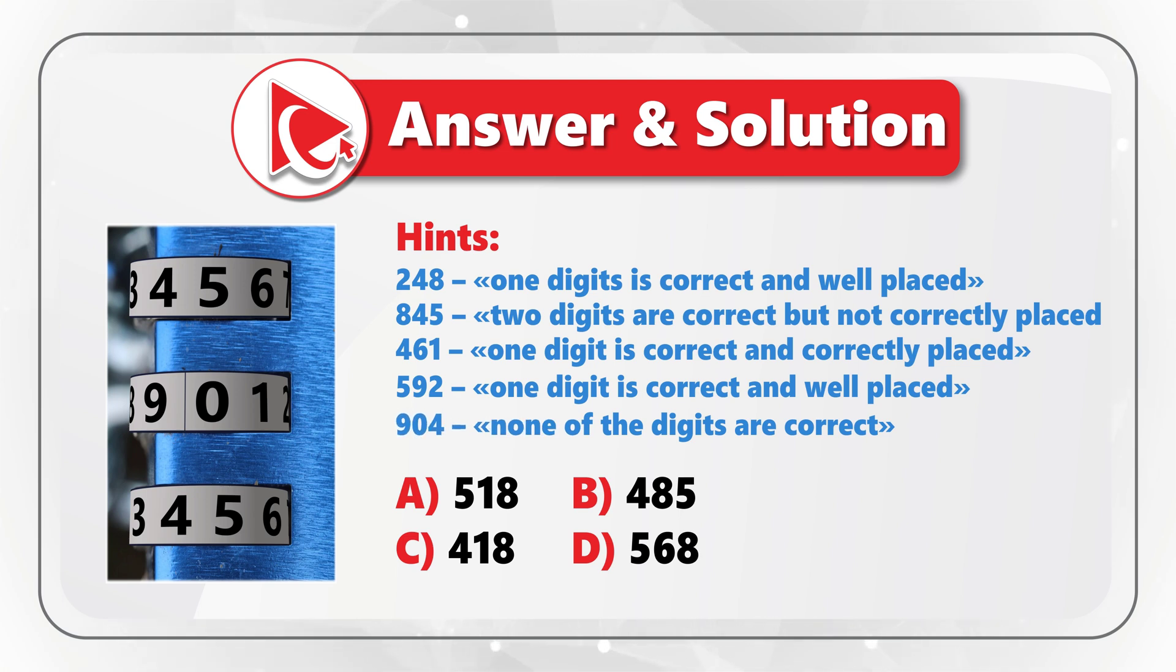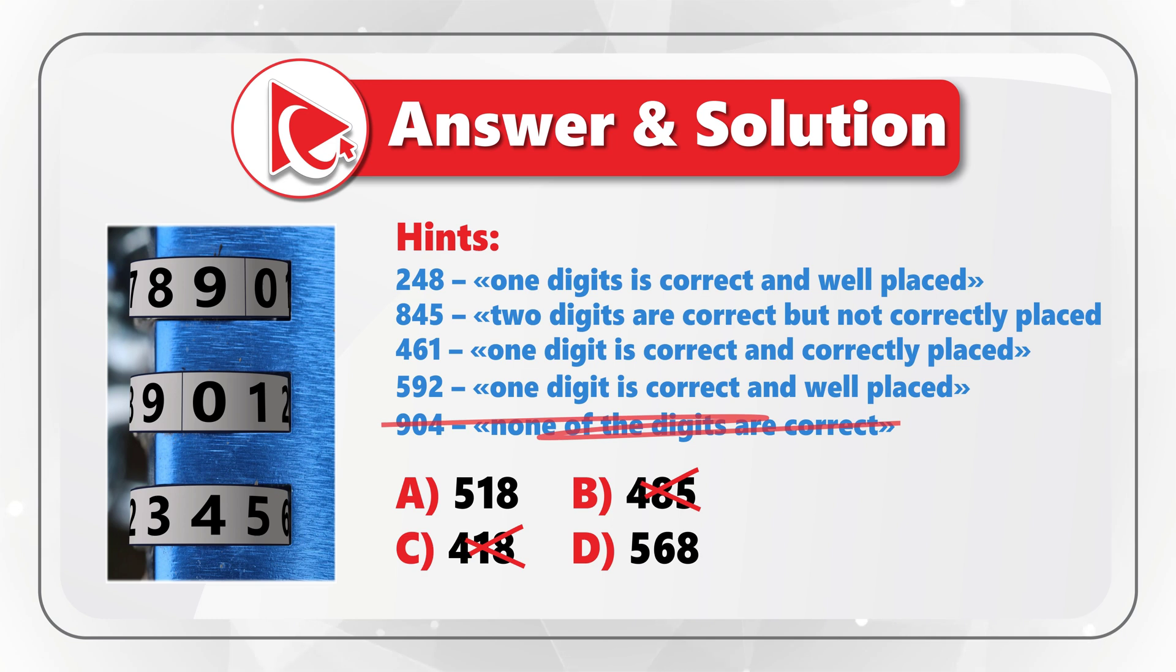Once we have learned that in combination 904, none of the digits are correct, we can eliminate two possible answers. We can eliminate both choices B and C, because both of them have digit 4, which is an incorrect digit.